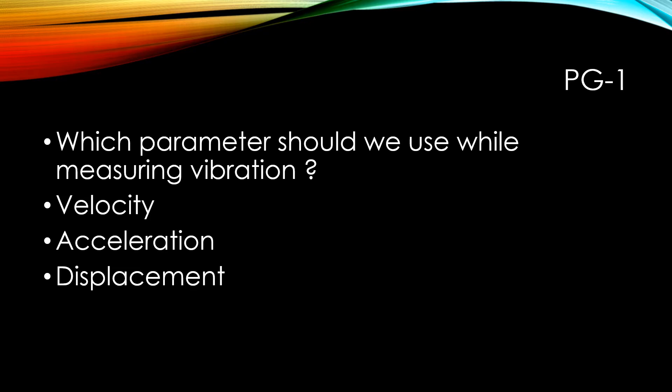Generally in the case between 10 Hertz to 1000 Hertz, the velocity gives a good indication of the severity of vibration. The majority of the general rotating machineries operate between 10 to 1000 Hertz range. So velocity is the most common vibration measurement and analysis tool.